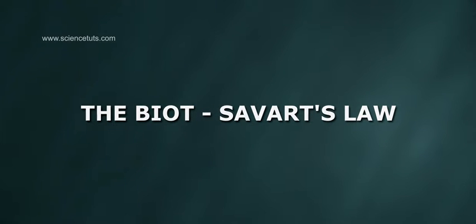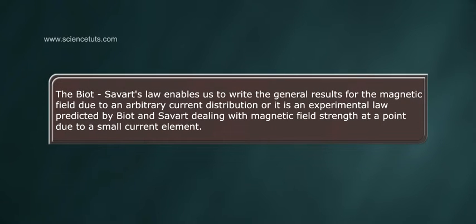The Biot-Savart's Law enables us to write the general results for the magnetic field due to an arbitrary current distribution. It is an experimental law predicted by Biot and Savart dealing with magnetic field strength at a point due to a small current element.